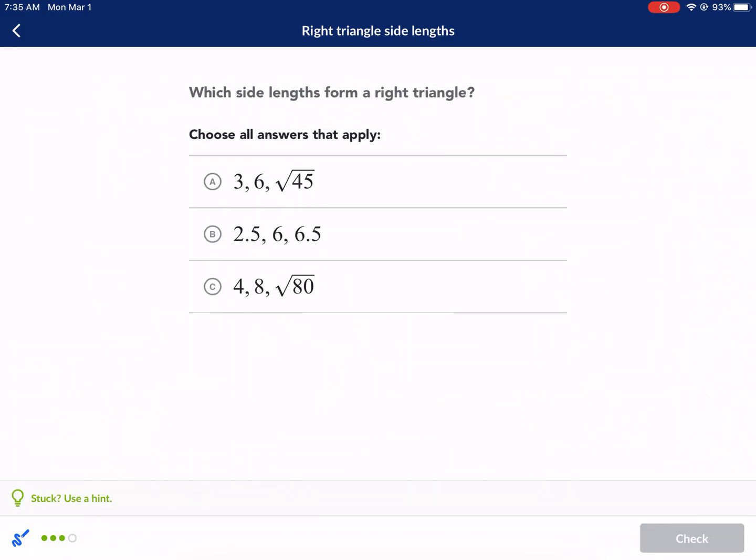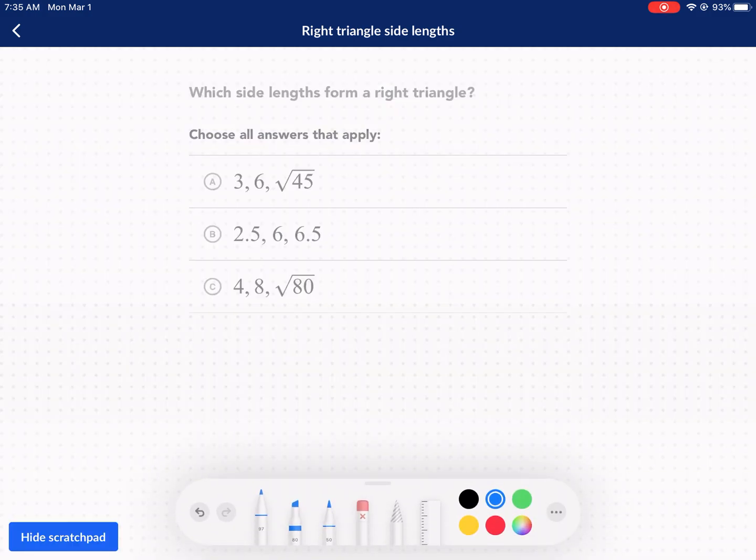Last one, choose all that apply. So we're going to square each one of these. So we have nine plus 36. Does it equal 45? And yes, it does. It does equal 45.